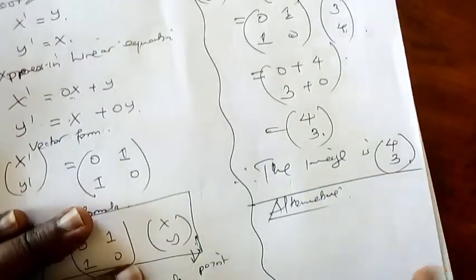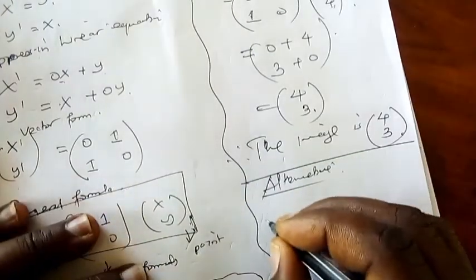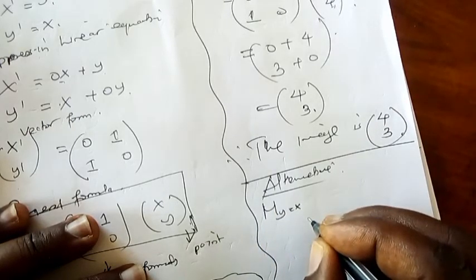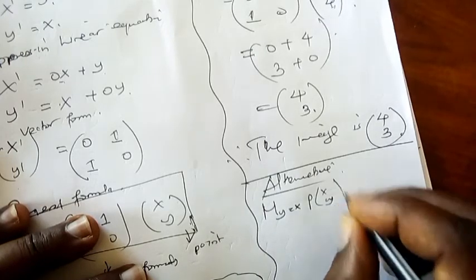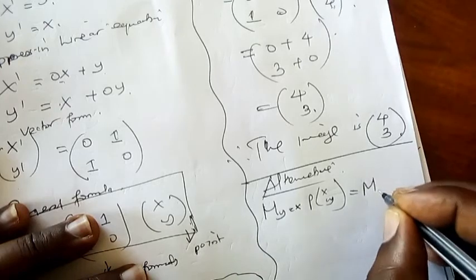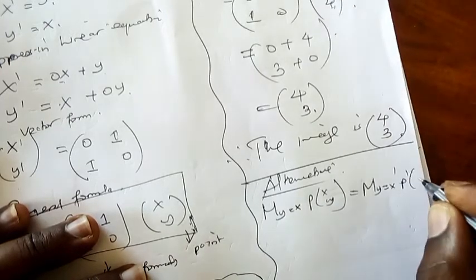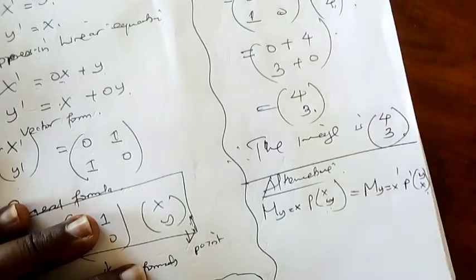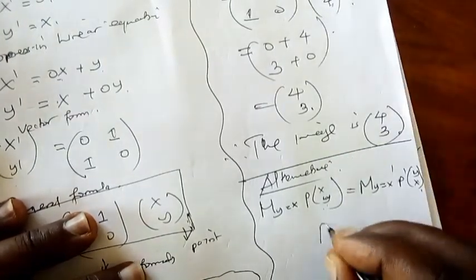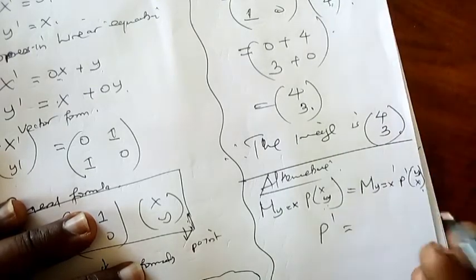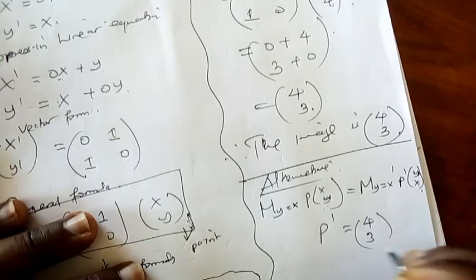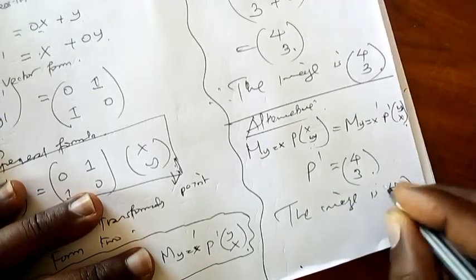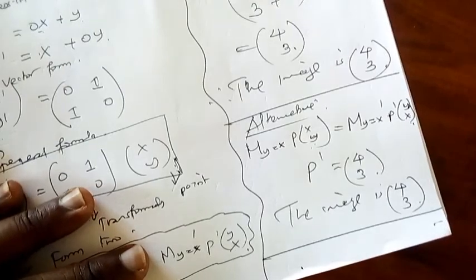The alternative using form 2: M subscript y=x of point (x, y) equals M subscript y=x dash of the point. We do the exchange - y goes up, x goes down. So the image will be: we start with y value which is 4, then x value which is 3. Following this formula, we get the image is (4, 3). Thank you for watching.